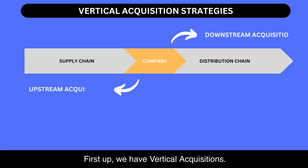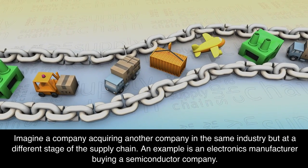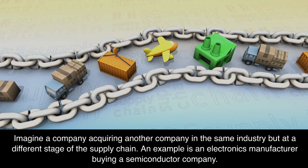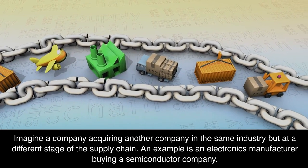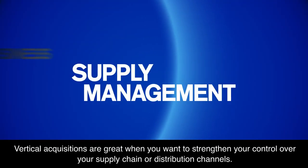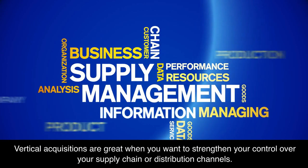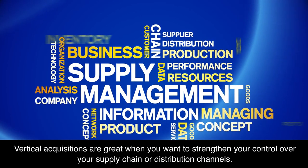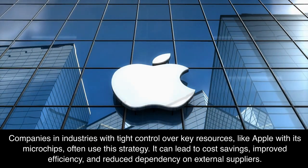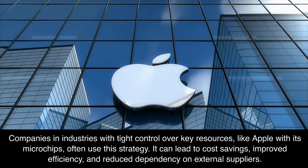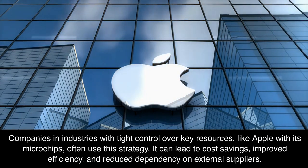First up, we have vertical acquisitions. Imagine a company acquiring another company in the same industry but at a different stage of the supply chain — for example, an electronics manufacturer buying a semiconductor company. Vertical acquisitions are great when you want to strengthen your control over your supply chain or distribution channels. Companies in industries with tight control over key resources, like Apple with its microchips, often use this strategy.